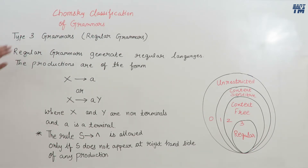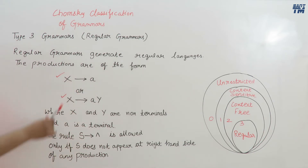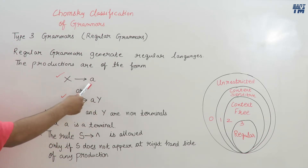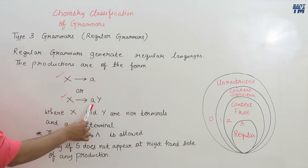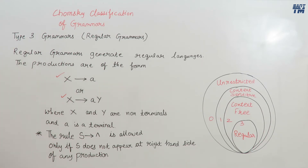Let's discuss type 3 grammars, which are the regular grammars. Regular grammars generate regular languages. In the case of regular grammars, the production rule is of the form: a non-terminal X can derive a terminal symbol A, or a non-terminal X can derive A followed by Y, where X and Y are non-terminals and A is a terminal.